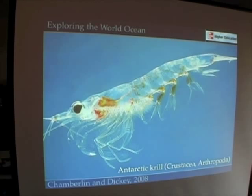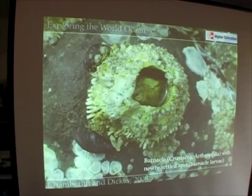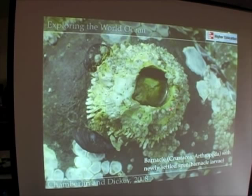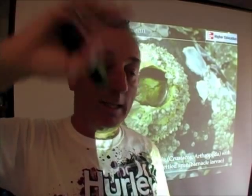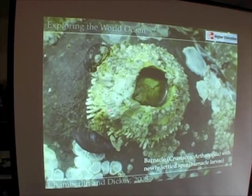Here is a barnacle — this is a close-up of a barnacle, maybe about the size of a quarter. Barnacles are also crustaceans; they're also arthropods. If you look carefully in this figure, you can see little tiny barnacles that have just settled down. Barnacles are a really good example of what we call meroplanktonic organisms. Their larvae, eggs, and sperm get sent out into the plankton, drift around for a few weeks, and then come back and settle down in areas where adults have previously lived. This adult barnacle is surrounded by little baby barnacles.